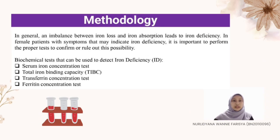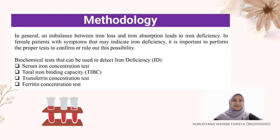Next, how to detect iron deficiency (ID). In general, an imbalance between iron loss and iron absorption leads to iron deficiency. In female patients with symptoms that may indicate iron deficiency, it is important to perform the proper tests to confirm or rule out this possibility. Biochemical tests that can be used to detect iron deficiency are serum iron concentration test, total iron binding capacity (TIBC), transferrin concentration test, and ferritin concentration test.